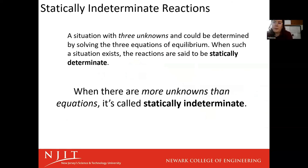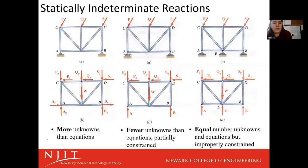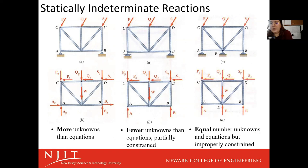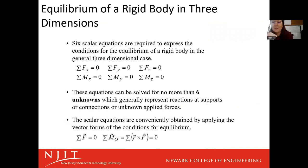Statically indeterminate reactions are when you have more unknowns than you have equations to solve for. If we have enough equations, then we call it statically determinate — we can determine all of the conditions using our statics. When there are more unknowns, that's when it's statically indeterminate. If we have fewer unknowns than equations, we are partially constrained, meaning we're missing some information. We want an equal number of unknowns and equations.